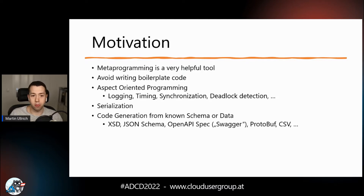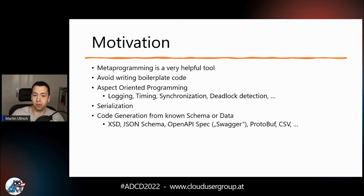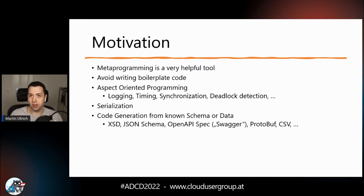Of course there's always serialization, which we do every day for API communication and file format reading and writing. We need to work with schema information — XSDs for XML, JSON Schema and OpenAPI (Swagger) for REST APIs, Protobuf for dense communication, or just CSV files for everyday data science work — things we don't want to write a lot of code for.